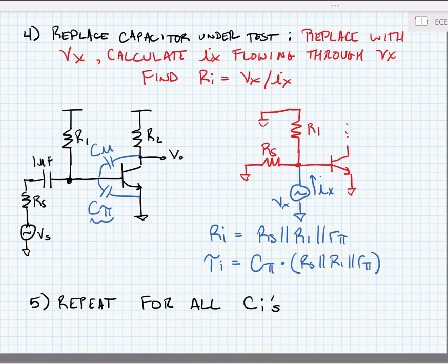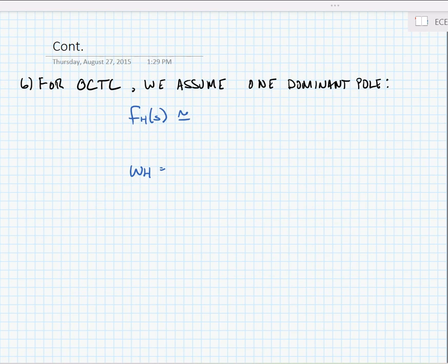In open circuit time constant analysis, we're going to assume that we have one dominant pole. Now, this is generally a good assumption, but there are some special cases, for instance, when we're using feedback, where this might not be a good assumption, particularly if we have two poles that are spaced relatively closely together and one isn't dominant over another one.